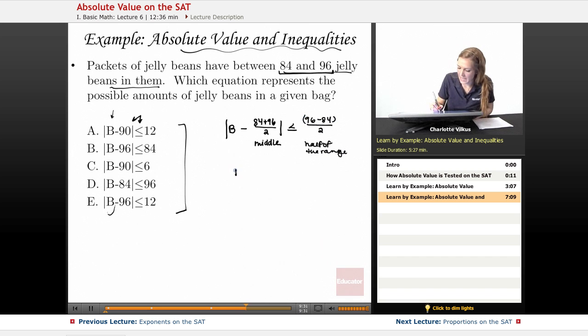In this case we're going to get the absolute value of b minus 90 is going to be less than or equal to 6. Because we basically have 12 over 2 here and here we're going to end up with 180 over 2. So this is our equation.